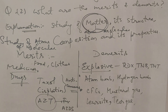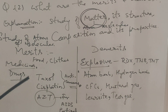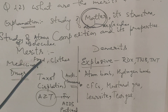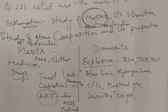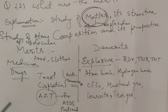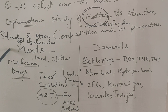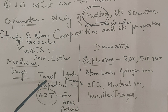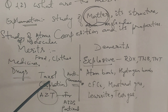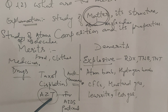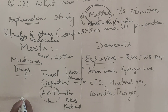We cannot survive without chemistry. Some of the merits of chemistry are food, clothes, shelter, medicine, and drugs — including polymers and household articles. Particularly in medicine, there are some life-saving drugs like taxol, cisplatin, and AZT, which stands for azidothymidine.